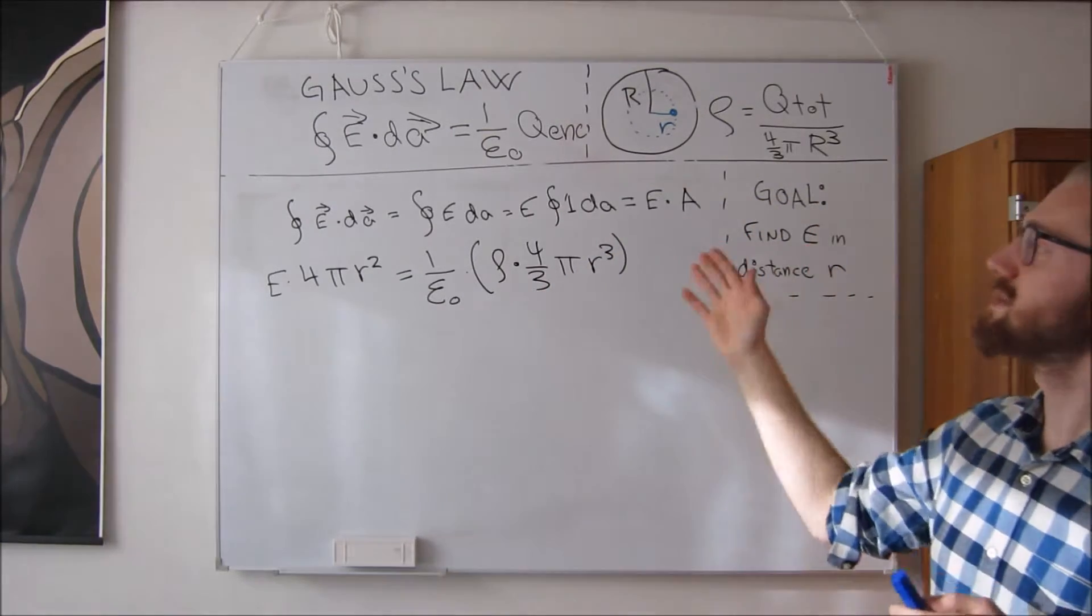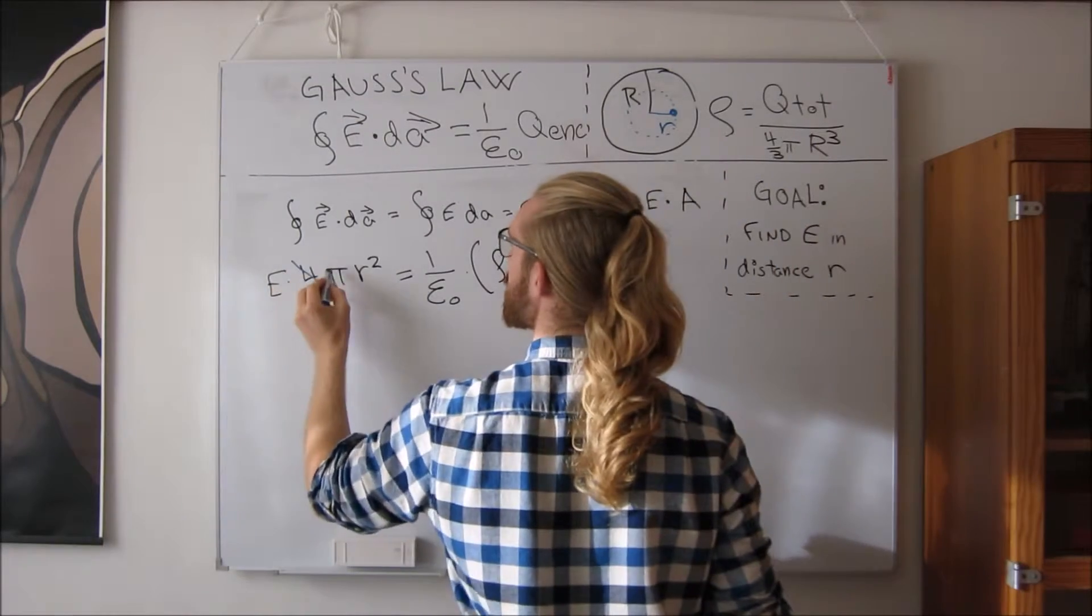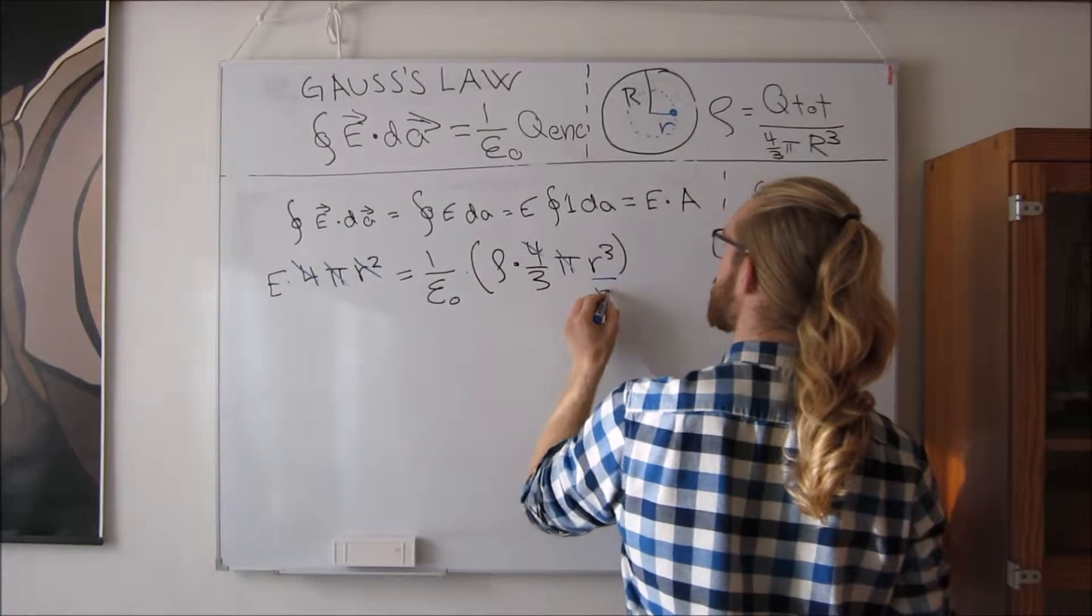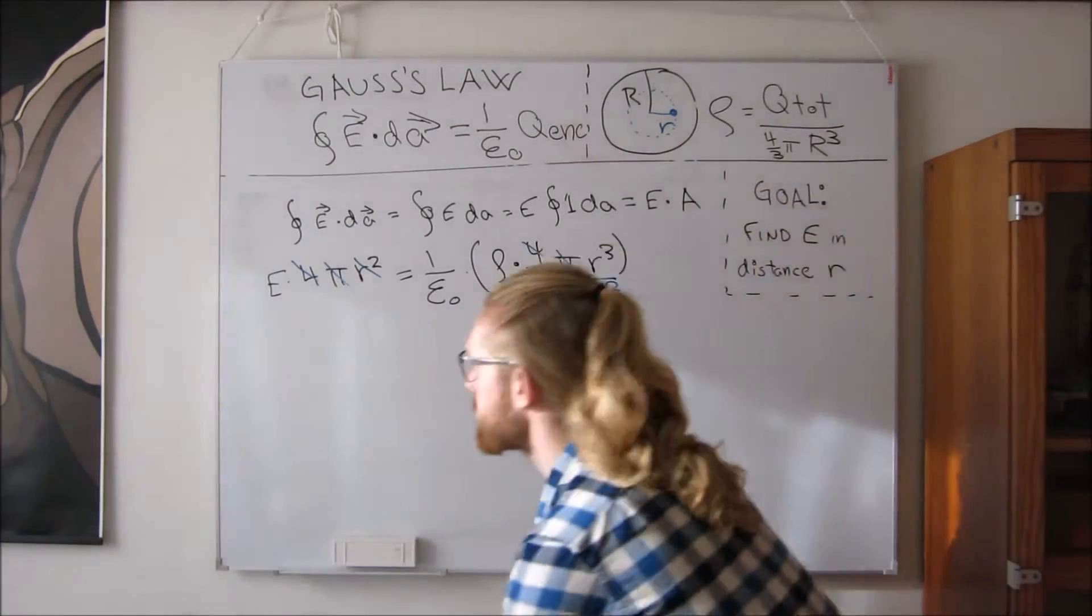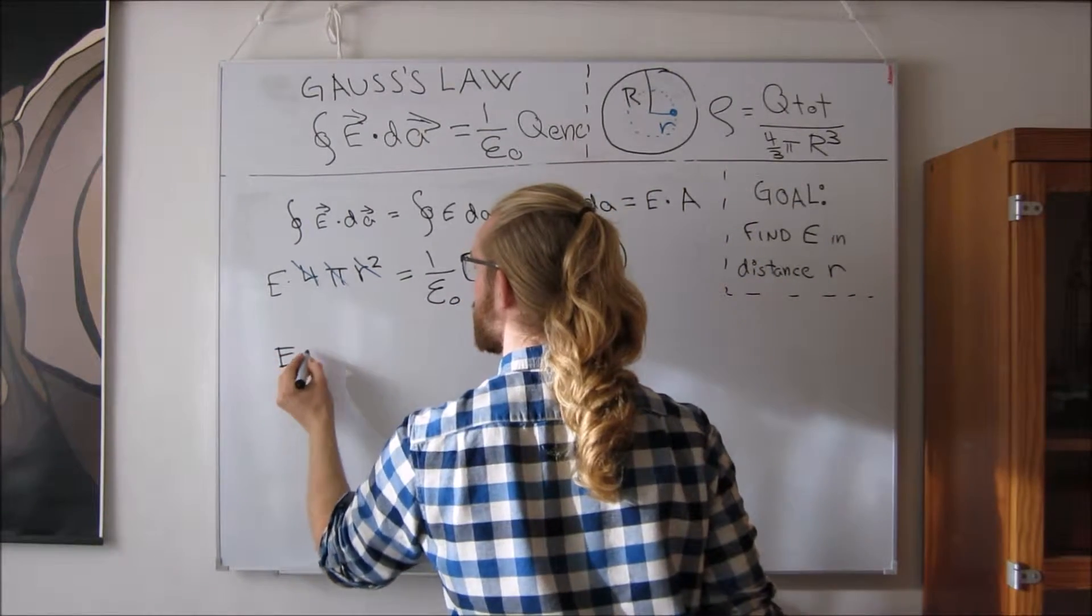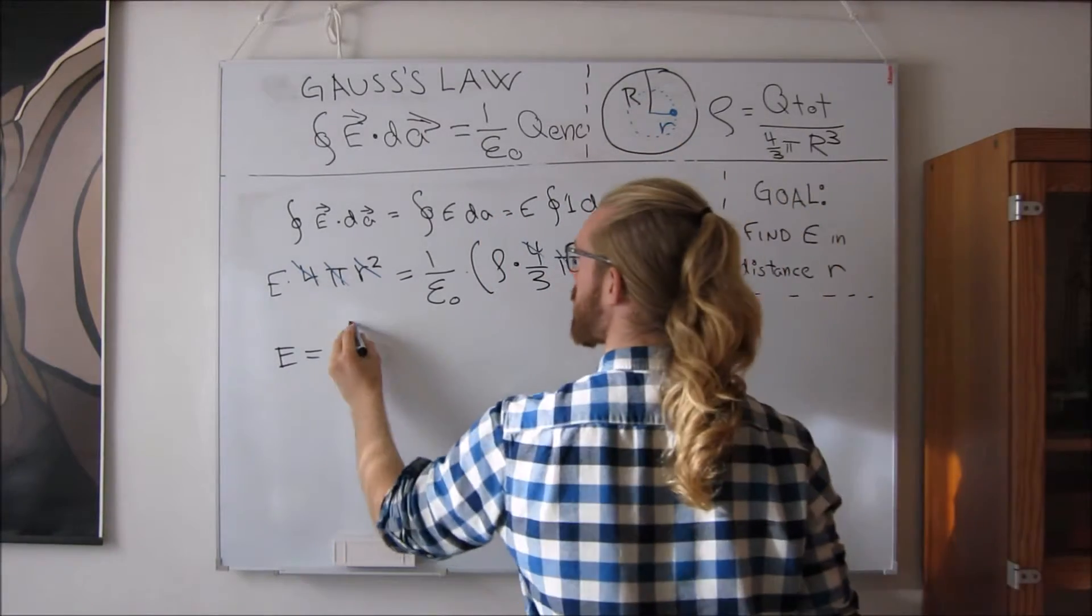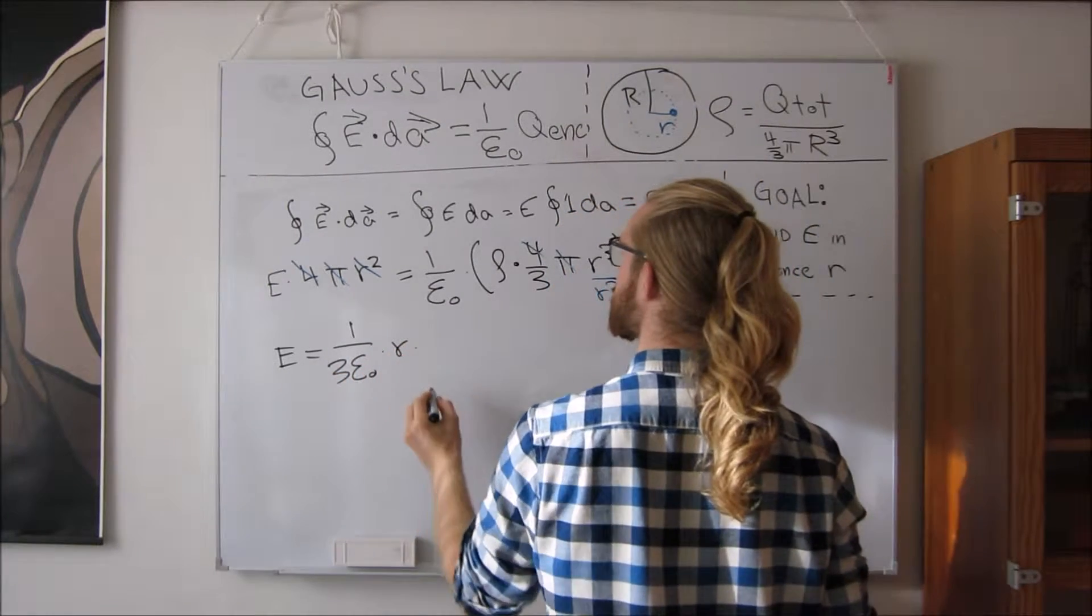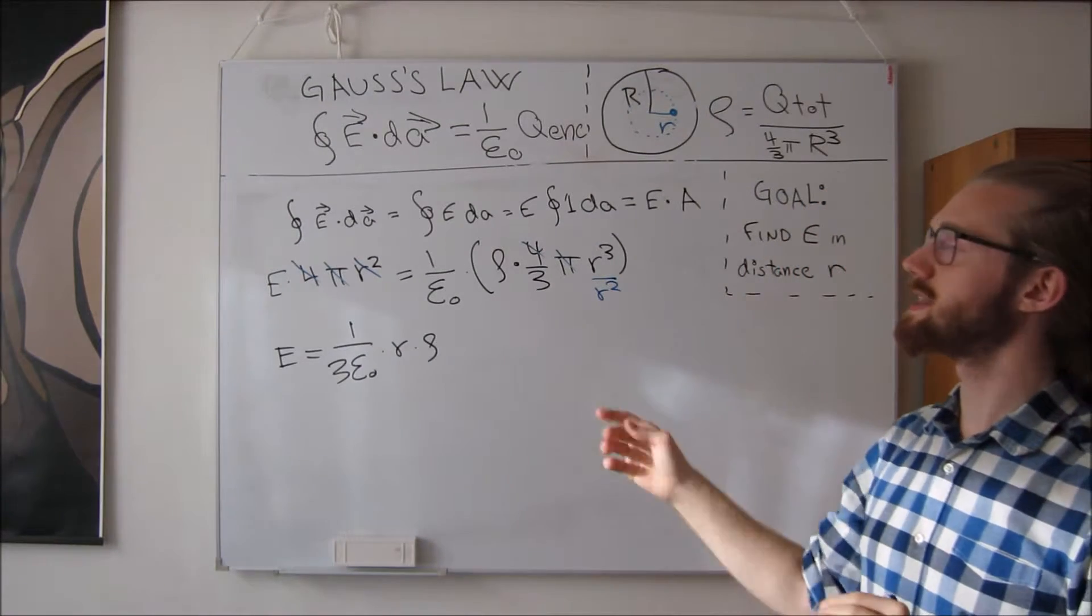Now we can simplify this expression. Because the 4 and the pi cancel, and if we divide by this distance squared, then we are left with the expression that the electric field strength at distance r from the origin is 1 over 3 epsilon, then the distance, and the charge density. And that's one expression for the electric field strength.